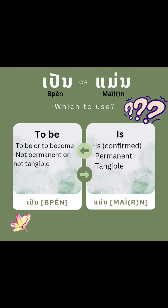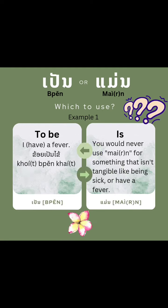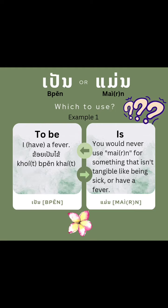In example one, 'Khoi bin kai.' Khoi bin kai means I have a fever, and a fever is not something permanent, and it's not tangible. You can't see, hear, or touch the fever. If you use Man, it would be saying that you are the fever.